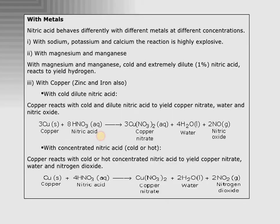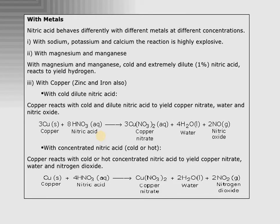Now there are certain very important reactions: copper with concentrated HNO3, and copper with dilute HNO3. Copper reacts with cold and dilute nitric acid in one reaction, and with cold or hot concentrated nitric acid in the other. In both cases, copper nitrate (salt) and water are formed. The key difference is the gas produced: with dilute HNO3, we get NO (nitric oxide), and with concentrated HNO3, we get NO2 (nitrogen dioxide).